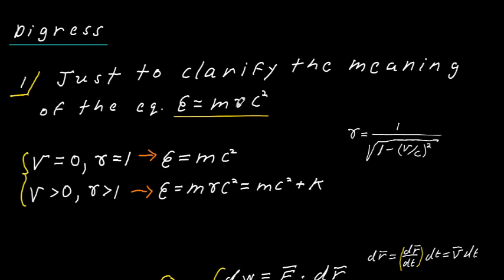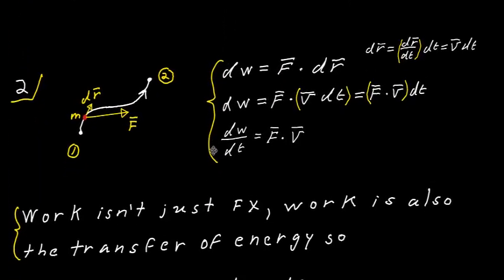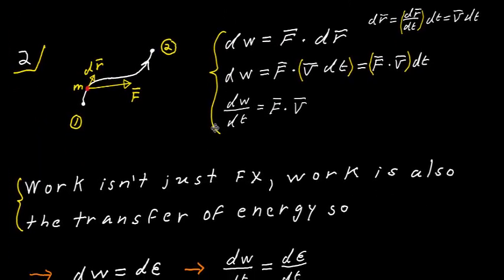Let me digress to clarify the relativistic energy E equals m·gamma·c squared. If v equals zero, gamma equals 1, so E is just mc squared — the rest energy. If v is greater than zero, gamma is greater than 1 and the energy increases. That increase is due to the motion, so in general the relativistic energy equals the rest energy mc squared plus the kinetic energy.